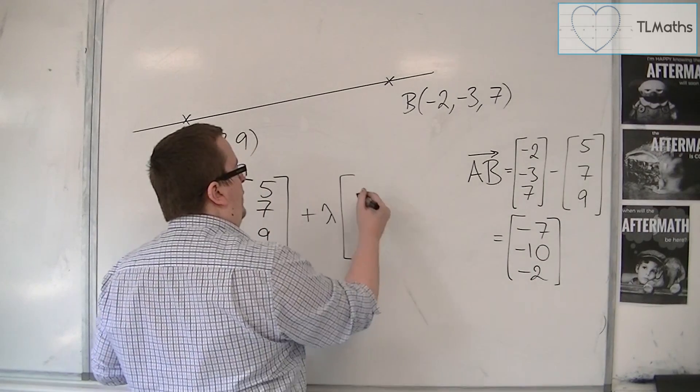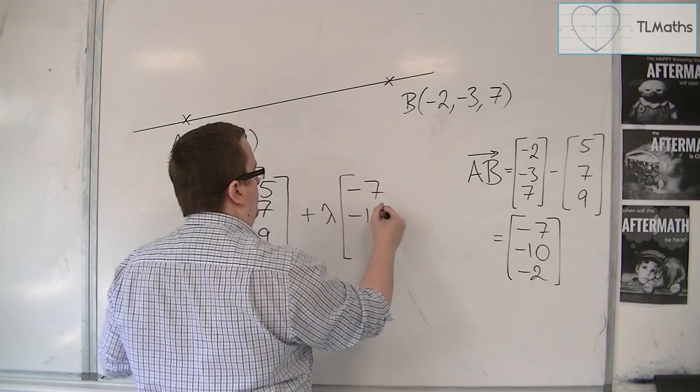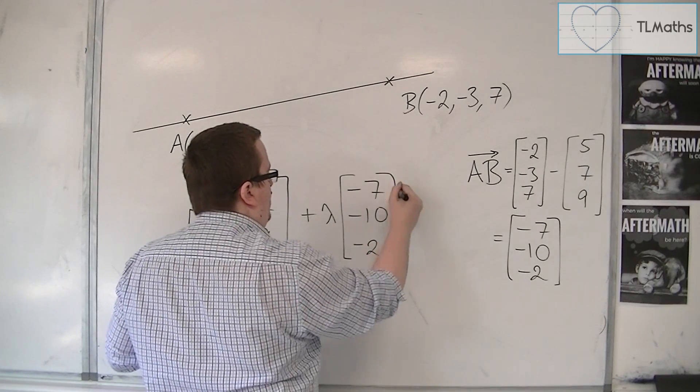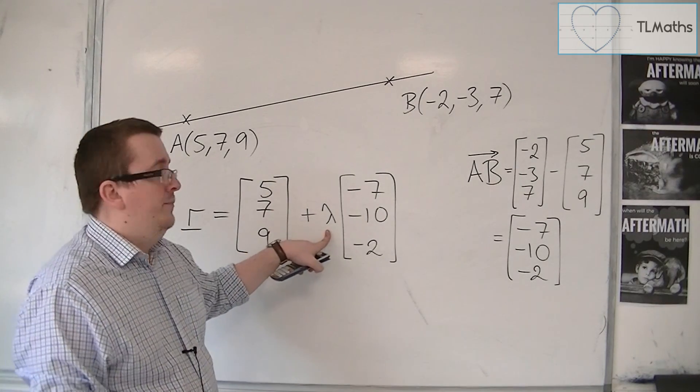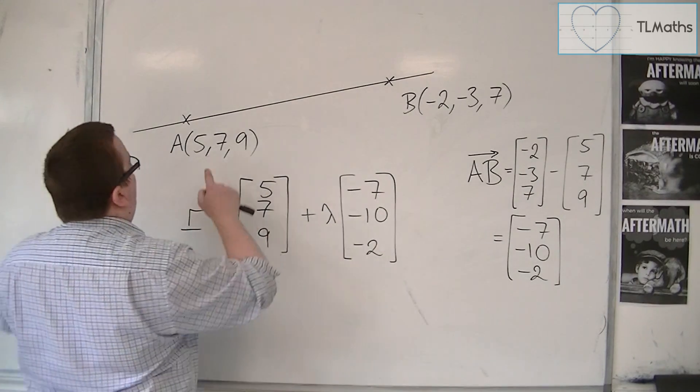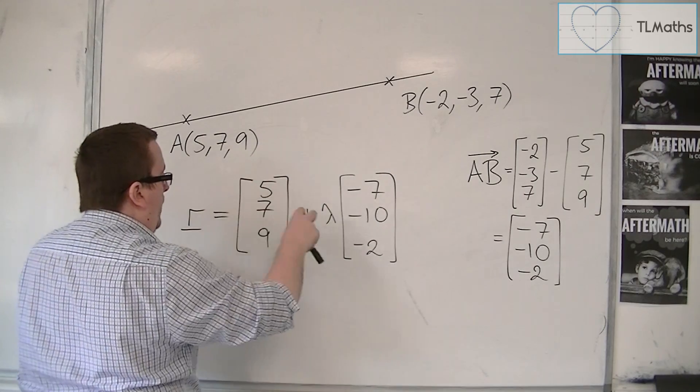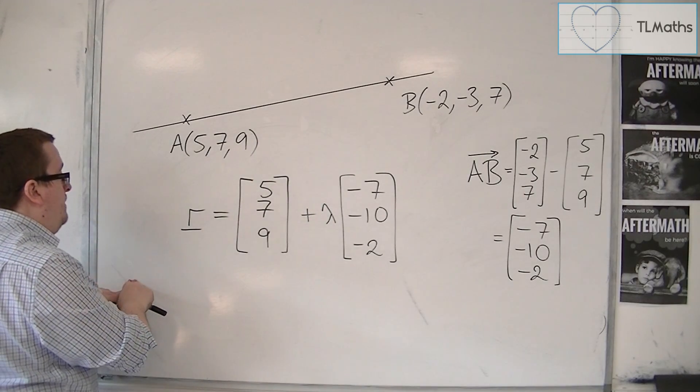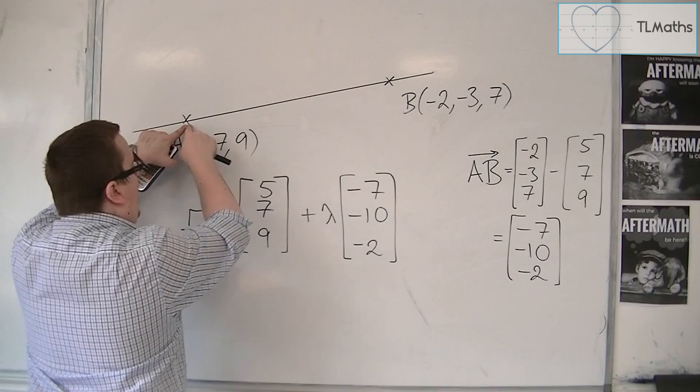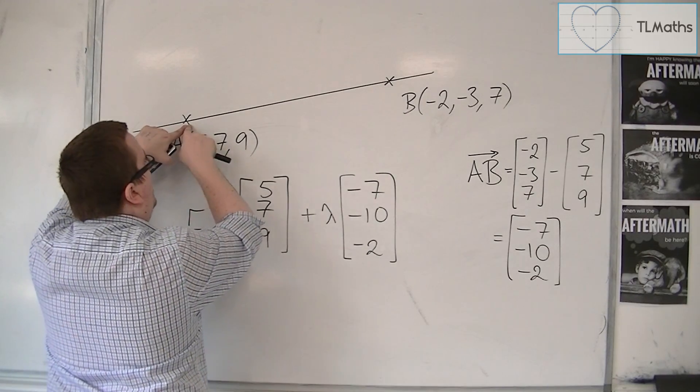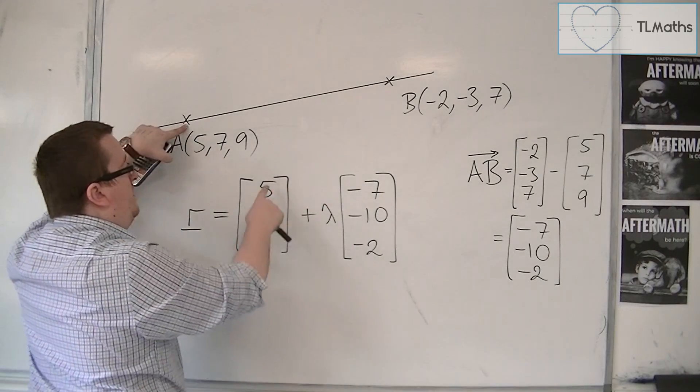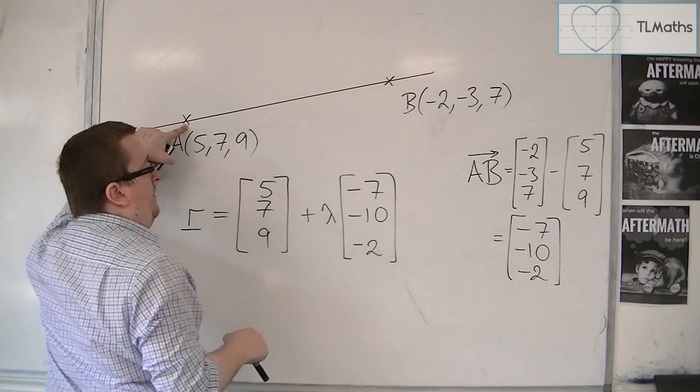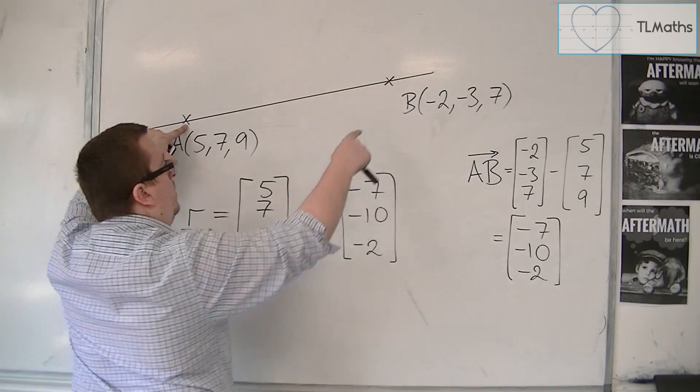And that is the direction vector. Now, if lambda was 1, this equation would tell me how to get from the origin to A, and then that would get me straight to B, because 5, 7, 9 plus -7, -10, -2 will get me to B.